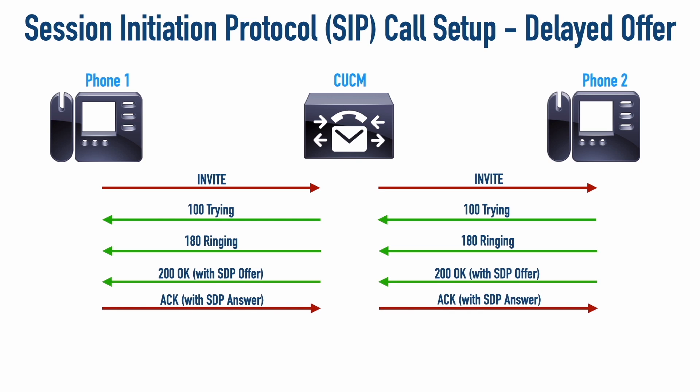Now we have our two-way media set up. So that's the big distinction to take from this video: with early offer, the initiator includes SDP in the INVITE; with delayed offer, the recipient includes SDP in the 200 OK and the answer comes back in the ACK. SDP information covers things like IP address, port numbers, and codecs to be used — and those are just a few examples; there are many other parameters we could negotiate as well.